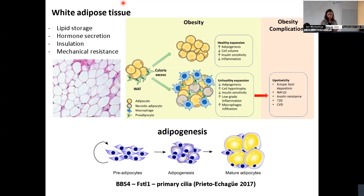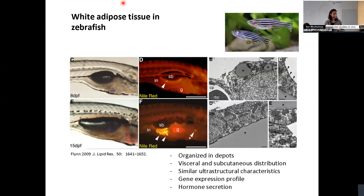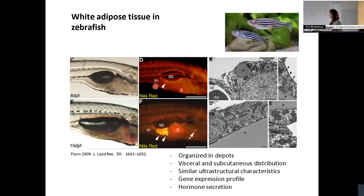In our lab this process is studied mainly in cell cultures and mouse models. During my postdoc, my idea was to introduce zebrafish as a model to study adipogenesis. Zebrafish is a wonderful model for studying in vivo processes because of its transparency — you can place it on a microscope stage and watch things happening within the tissue. White adipocytes develop during larval stages, and here we see an image of a tissue labeled with NileRed showing fat accumulation.